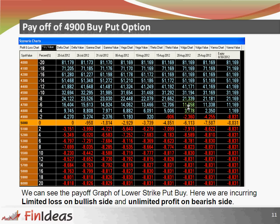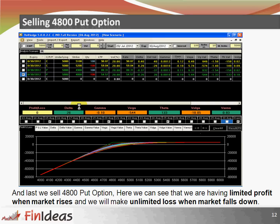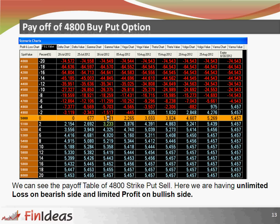The fourth trade is selling the 4800 put. Here we can see that we are having limited profit when market rises and we are making unlimited losses when market falls. In the graph, when market is rising we are having limited profit, and as soon as market is below 4800 we are having unlimited losses. The table confirms limited profit up to the premium when market is rising, and unlimited losses below 4800.